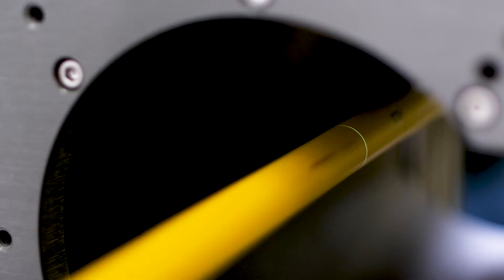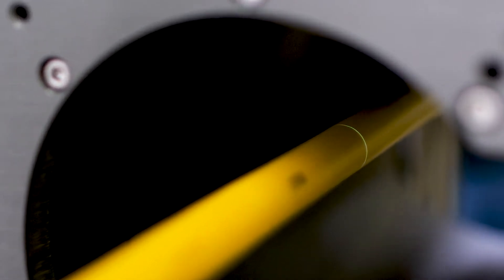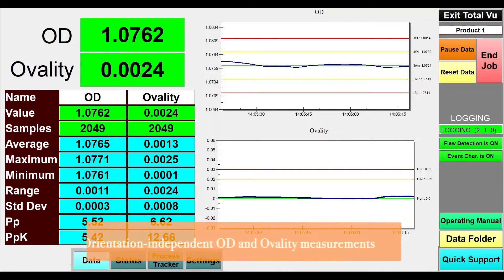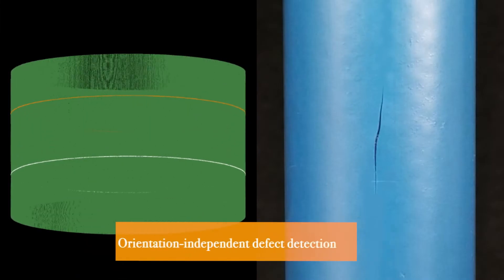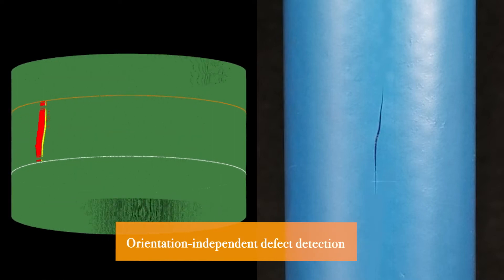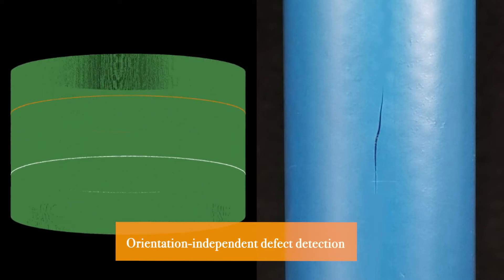FlawSense is a 100% non-contact laser-based OD and ovality measurement and surface defect detection system. FlawSense achieves a full 360-degree product inspection independent of the orientation of the part in the field.